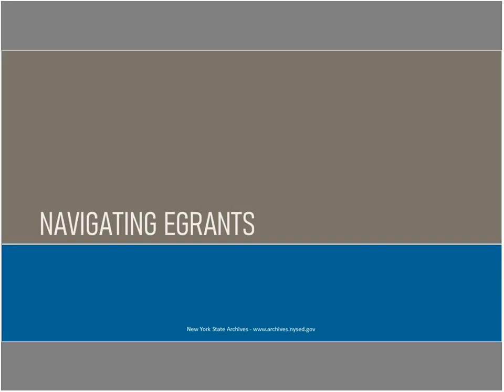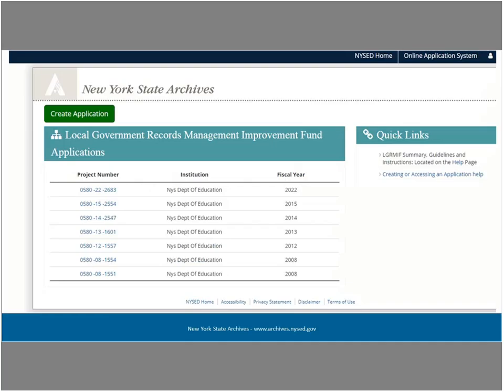In this section of the webinar, we will look at the process of creating an application in the eGrants system, including the various forms you need to complete, both in electronic and paper formats. Once you are logged in, you will see the eGrants homepage. Click on the LGRMIF link to get to any applications you have already created, or to create a new application. This page will be your home base, where you can create an application as well as manage a grant. Here you will see a list of any previous applications that you started and any you submitted.